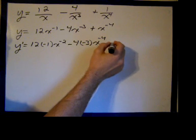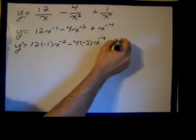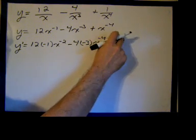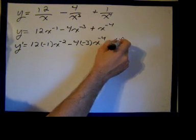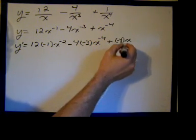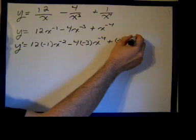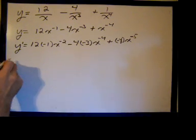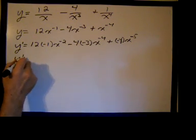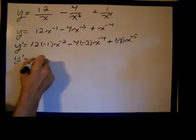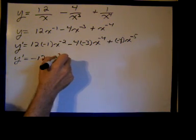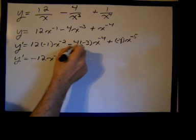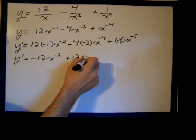Now we have negative 4 times x to the negative 5th. Now I'll just multiply out those constants. We have negative 12 x to the negative 2nd plus negative 4 times negative 3 is plus 12 x to the negative 4th minus 4 x to the negative 5th.